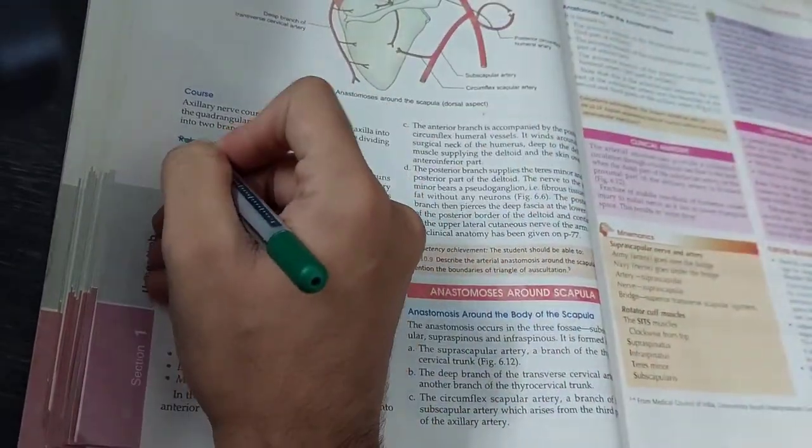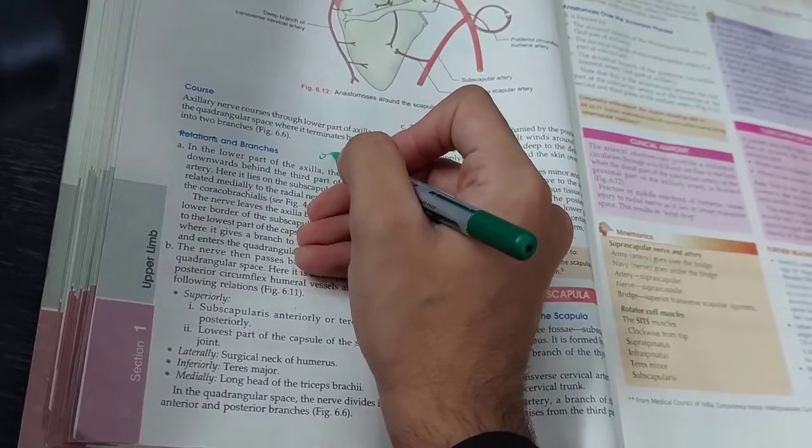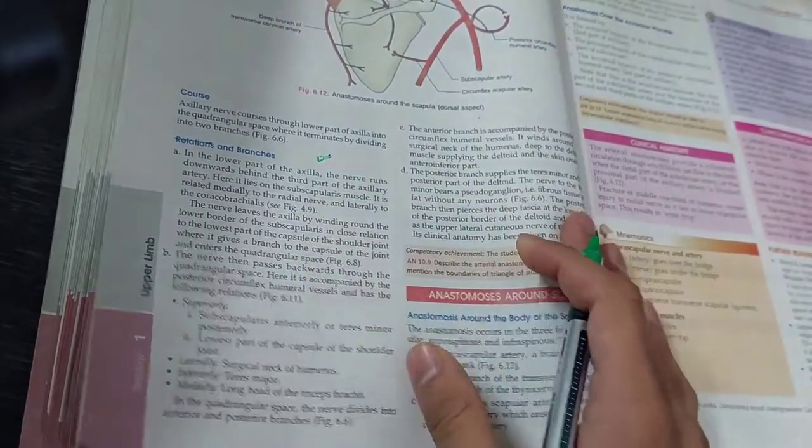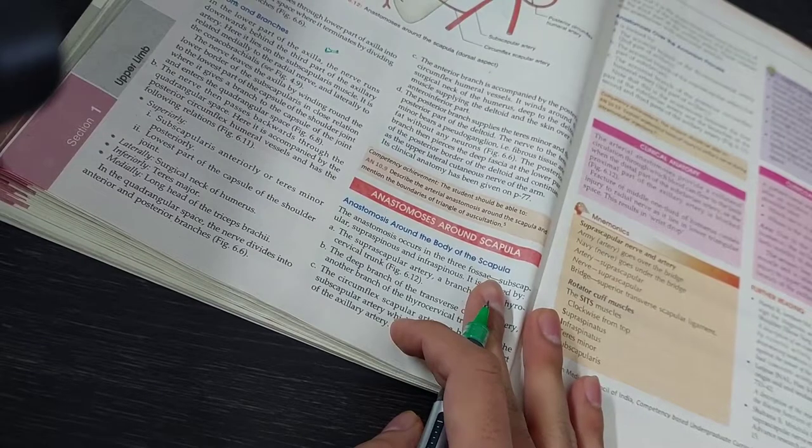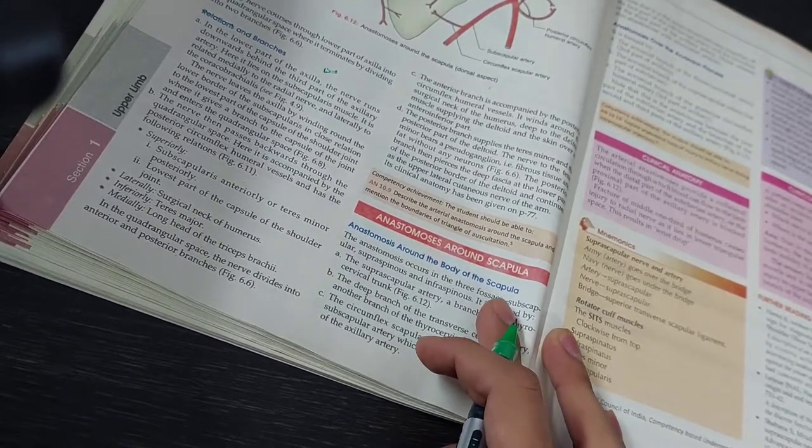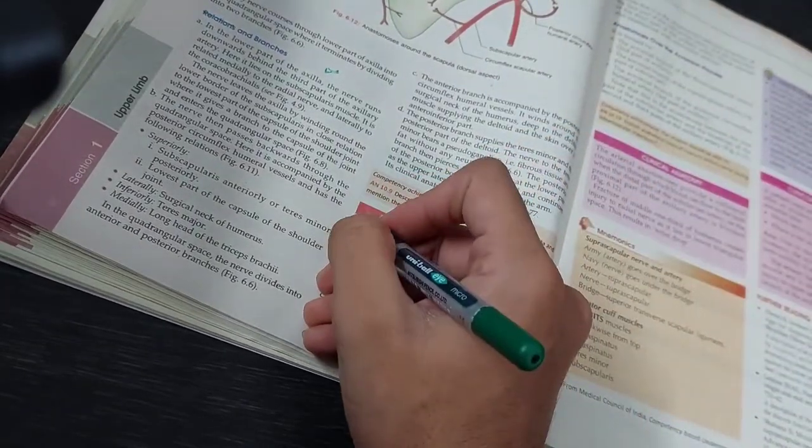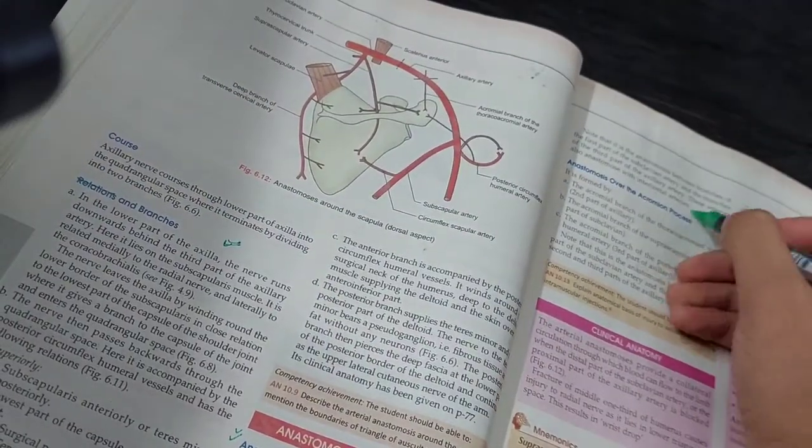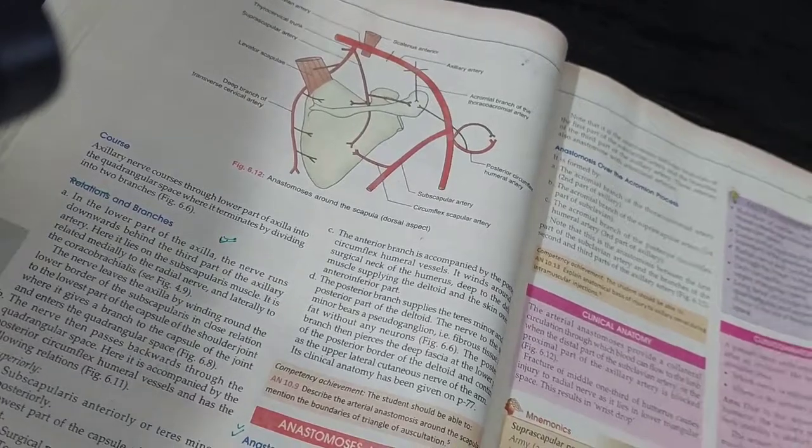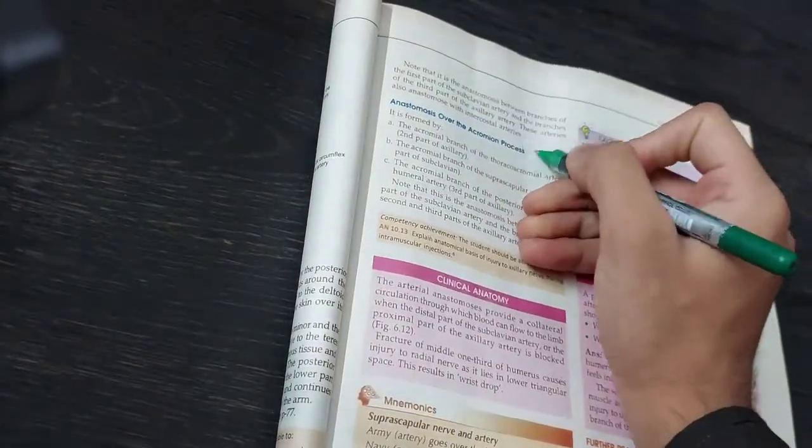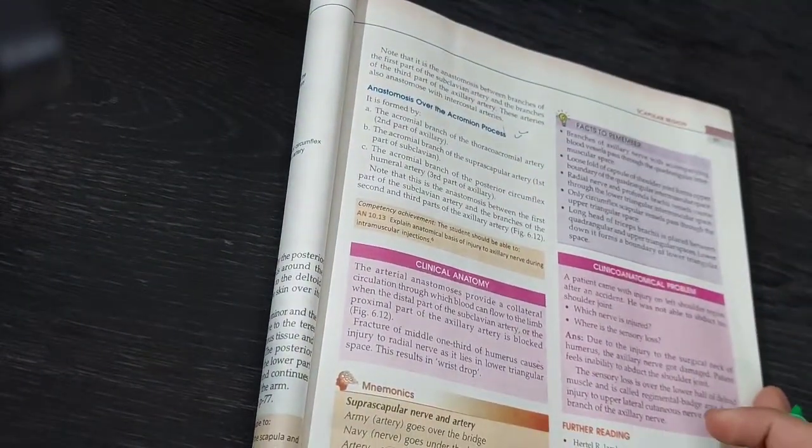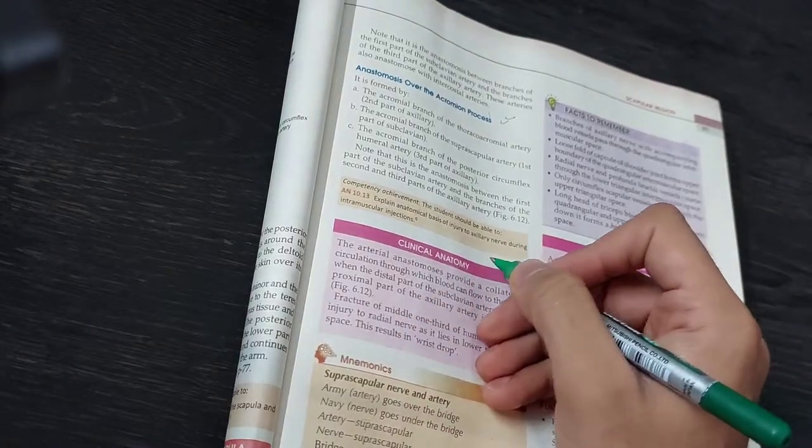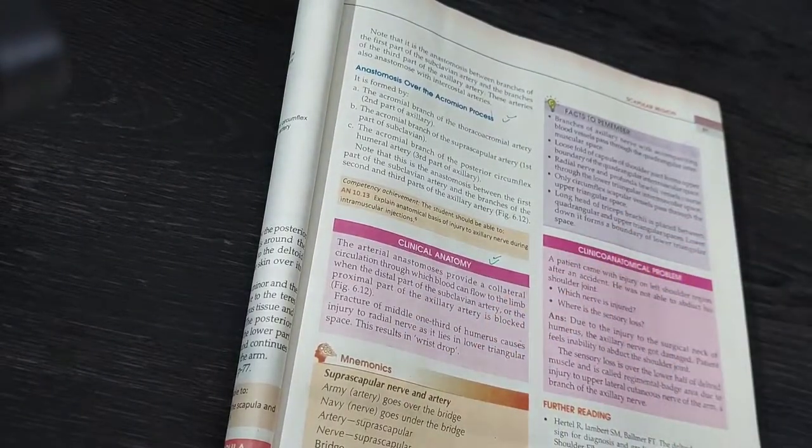Relations, here you have only branches names and their supply. And then anastomosis around the scapula, this is also very important. And anastomosis of the acromion process, here you have to do who are arteries participate, here you have to tell. And this clinical, you have to do.